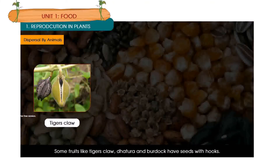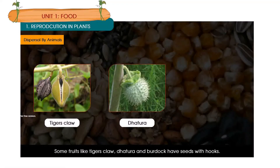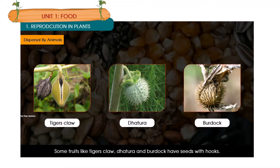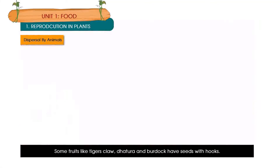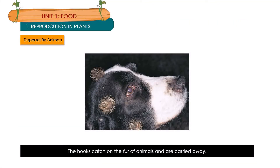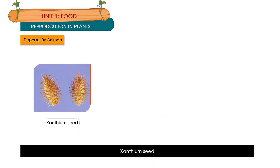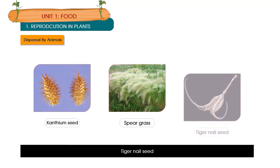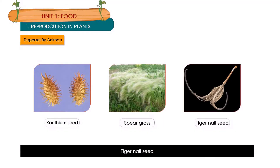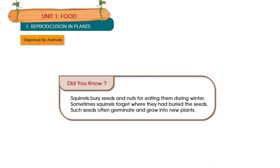Some fruits like tiger's claw, dhatura and burdock have seeds with hooks. The hooks catch on the fur of animals and are carried away. Examples include centium seed, spear grass and tiger nail seed. Did you know? Squirrels bury seeds and nuts for eating during winter. Sometimes squirrels forget where they buried the seeds, and such seeds often germinate and grow into new plants.